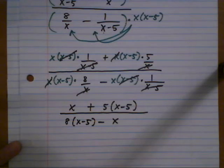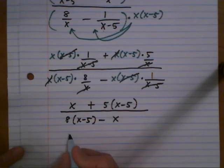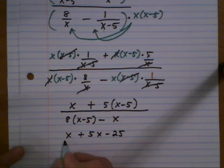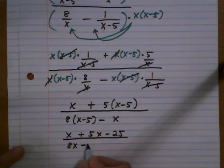And now we'll simplify what we have. Let's clear parentheses on the top, x plus 5x minus 25. And same on the bottom, 8x minus 40 minus x.